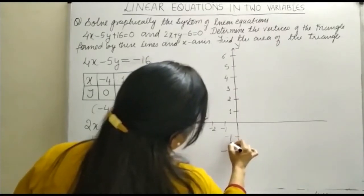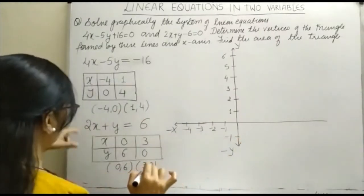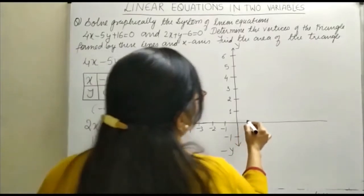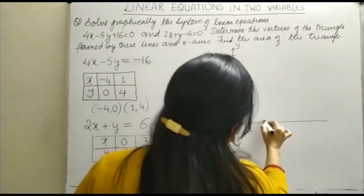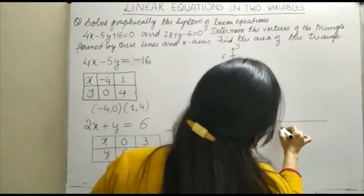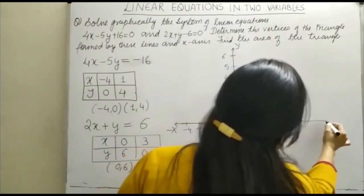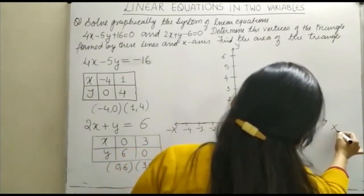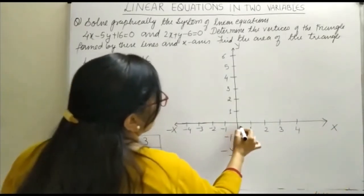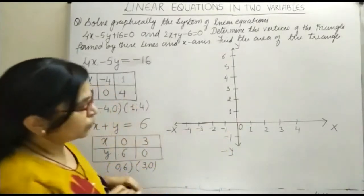For x we need up to 3. So 1, 2, 3 - you can take one more value, 4. This is our positive x-axis and this is our origin O.